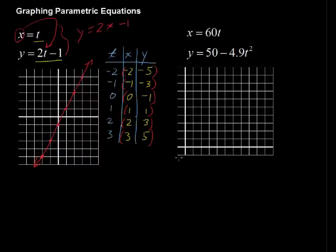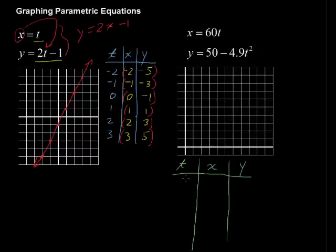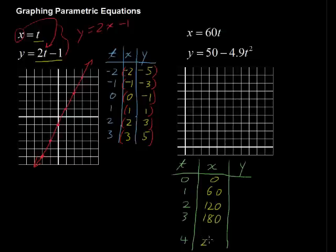So, we will make a table again with the t values and then some x and y coordinates, the corresponding coordinates. So, let's start again at t, 0, right? We won't go back in time on this one and then t is 1 or 2 or 3. I'm going to leave a space because something interesting is going to happen in between 3 and 4. Then x equals 60 times whatever t is. So, it starts at 0 and then 60, 120, 180. We've got multiples of 60, and then 240.